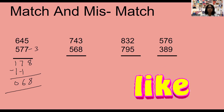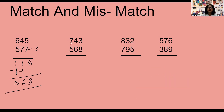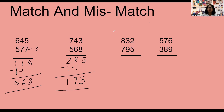One more example — after this you can do the remaining two questions yourself and practice. You can see how easily you are getting the answer. 7 minus 5 is 2, it's a mismatch, so write minus 1 here. Complement of 6 is 4, and 4 plus 4 is 8. Again it's a mismatch, write minus 1 again. Complement of 8 is 2, and 2 plus 3 is 5. Now: 2 minus 1 is 1, 8 minus 1 is 7, and 5. The answer is 175. Do the remaining two questions yourself for practice.